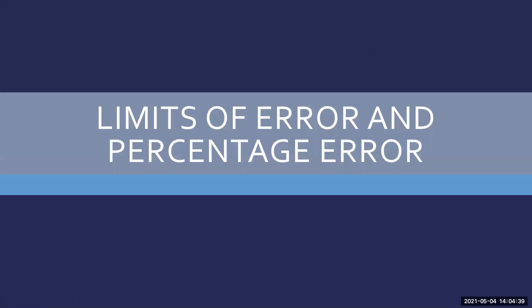What is limits of error and what is percentage error? Understanding this is very important. In the last session we discussed about accuracy and precision. Accuracy is a qualitative term — we cannot determine quantity based on it. To quantify accuracy, we require something called error. Error is inversely proportional to accuracy: when error increases, accuracy decreases; when error decreases, accuracy increases.